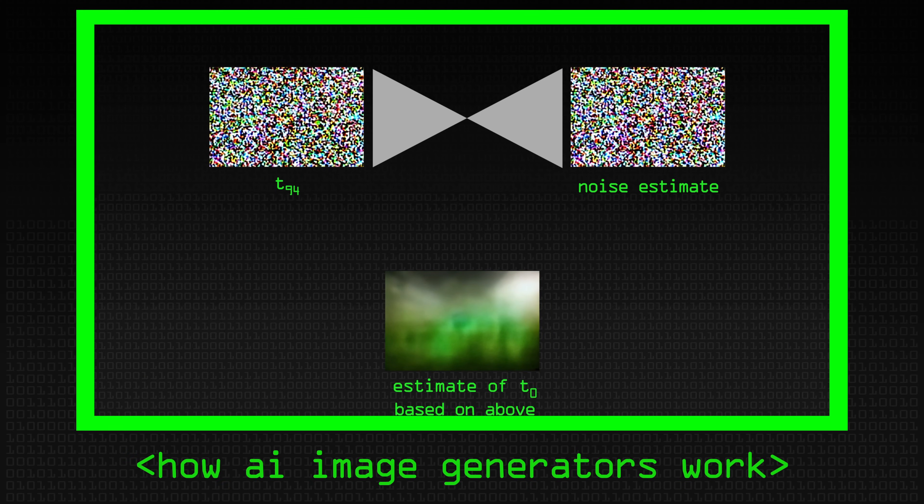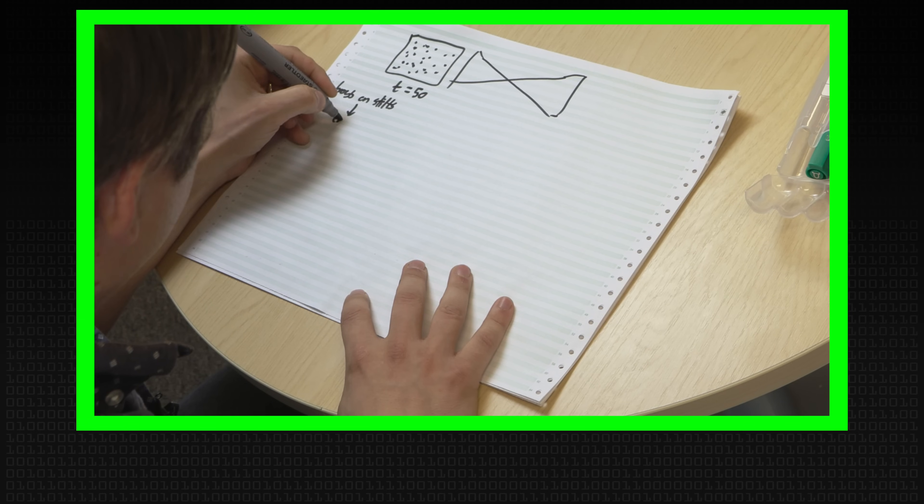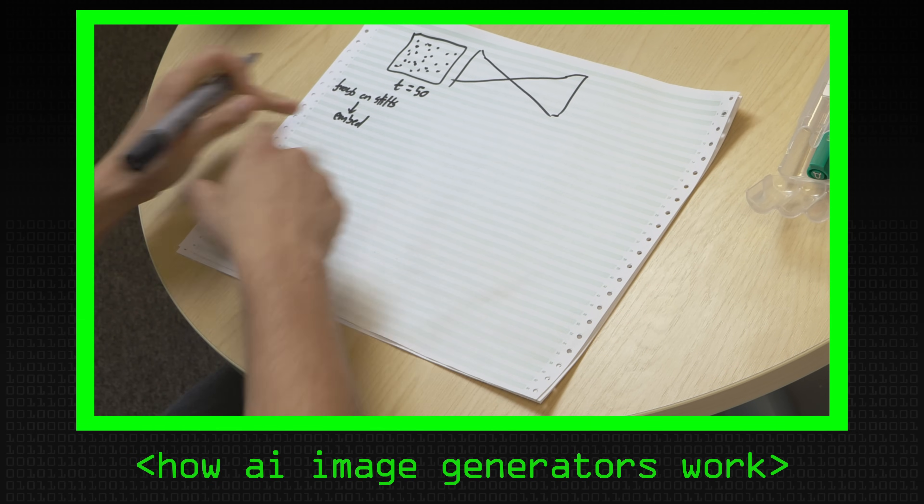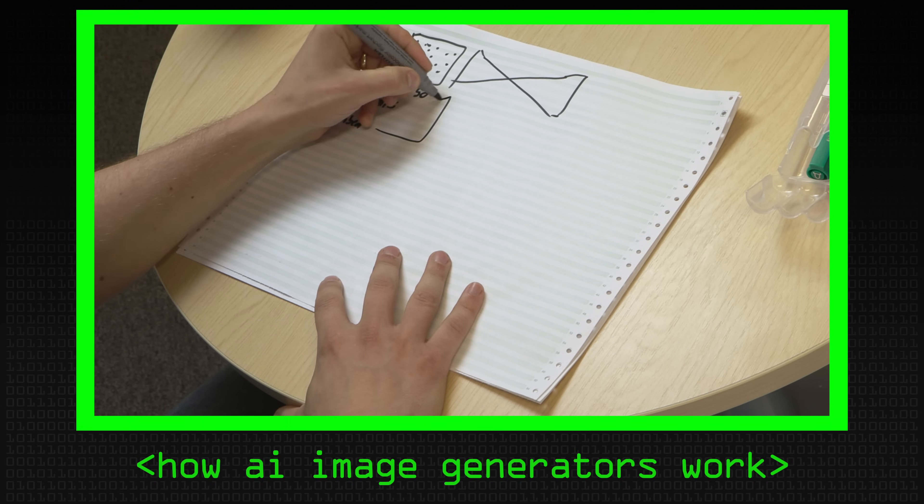In a previous video, we looked at stable diffusion and image generation using diffusion. And at one point in the video, I basically hand-waved off this text embedding text prompt thing. We embed this by using our GPT-style transformer embedding, and we'd stick that in as well.